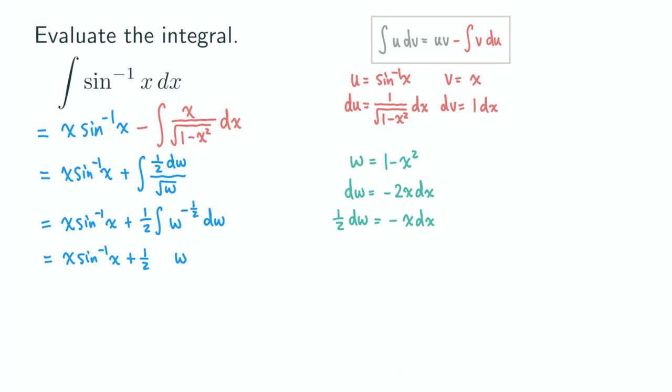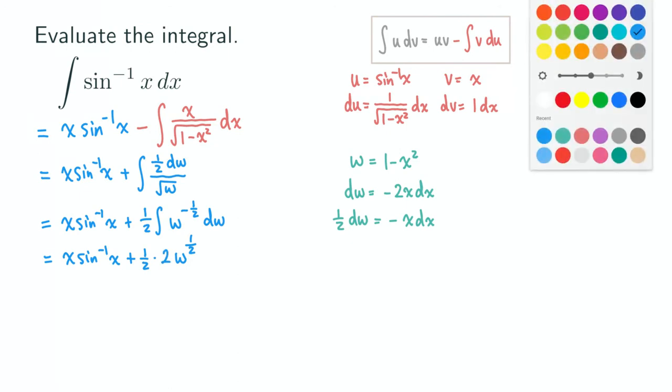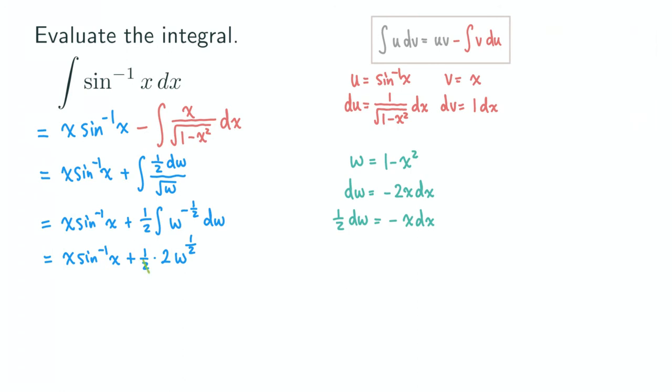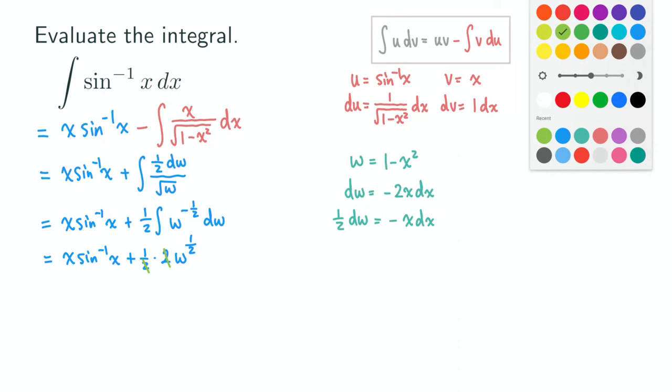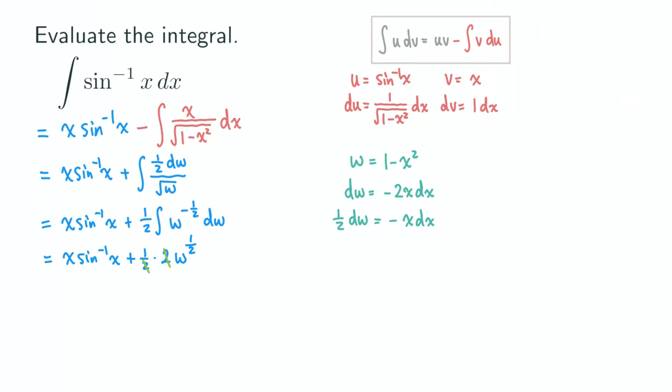Be 1 half here. Integrating this, we are adding 1 to the power, which is negative 1 half plus 1, which is just 1 half. And then don't forget that you need to multiply by the reciprocal of whatever new power that you have here after adding the 1. So you need to multiply by 2. So we multiply by that 2 here. And see that when you multiply by 2, that will cancel those 2s out.